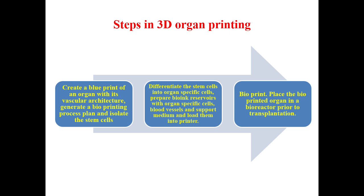Summarizing the steps again: first, create a blueprint of an organ with its vascular architecture — what blood cells are present, what is required to nourish the organ, the structure, cellular and tissue layers. Second, differentiate stem cells into organ-specific cells and prepare bio-ink reservoirs with organ-specific cells, blood vessels, and support medium, then load them into the printer. The third step is bioprinting — placing the bioprinted organ in a bioreactor prior to transplantation.